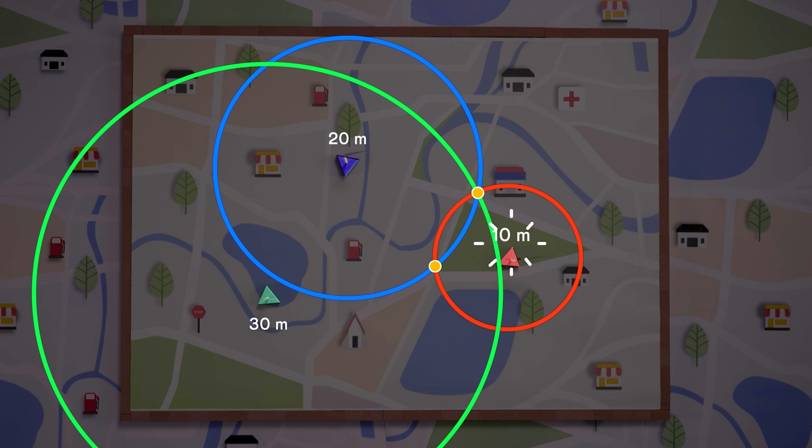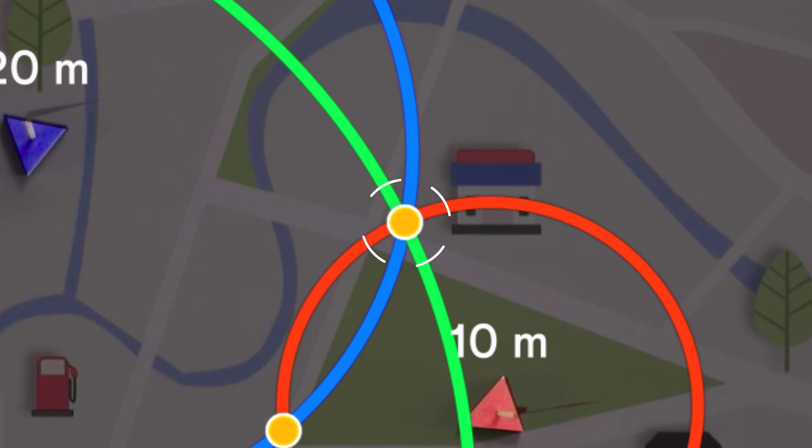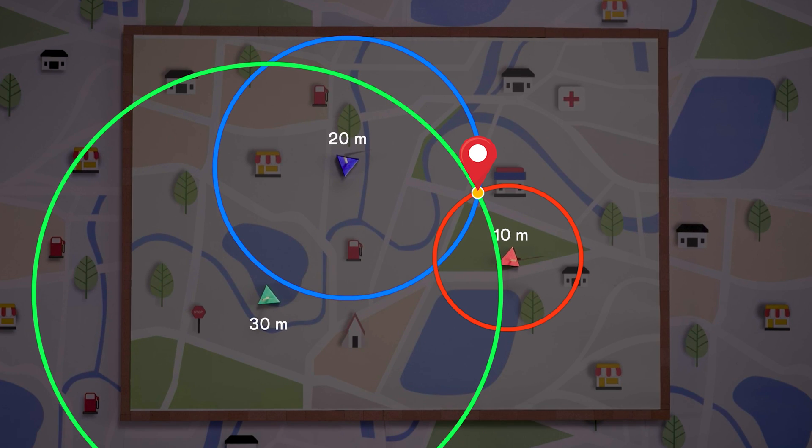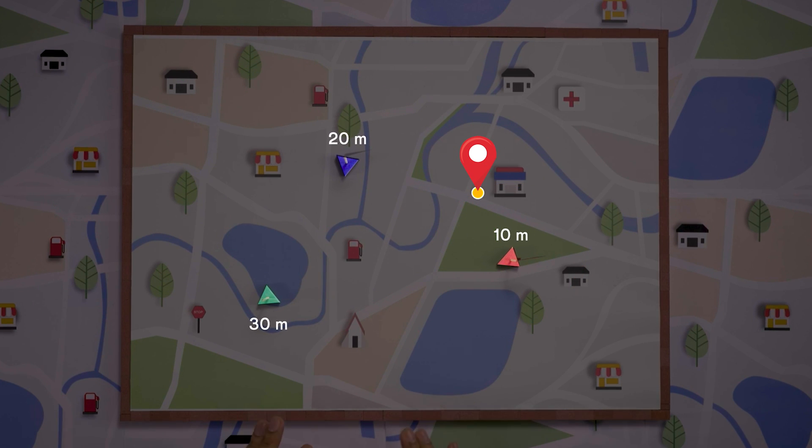But the only point that is 10 meters from the red flag, 20 meters from the blue flag, and 30 meters from the green flag is this, where the three circles intersect. That's my exact location. No other point can be 10, 20, and 30 meters away from these three flags respectively.